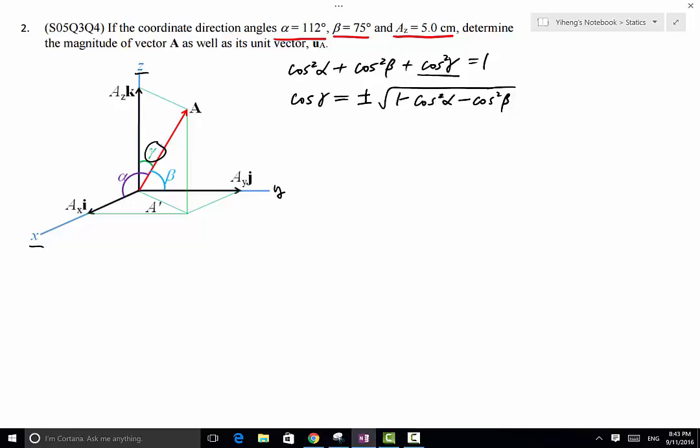So on the other hand, if gamma is an obtuse angle, then cosine gamma is a negative value. Because of that we can eliminate the negative value, so this is going to be positive. So we substitute in the values, so that's 1 minus cosine 112 squared minus cosine 75 degrees squared, and that equals to 0.8903.